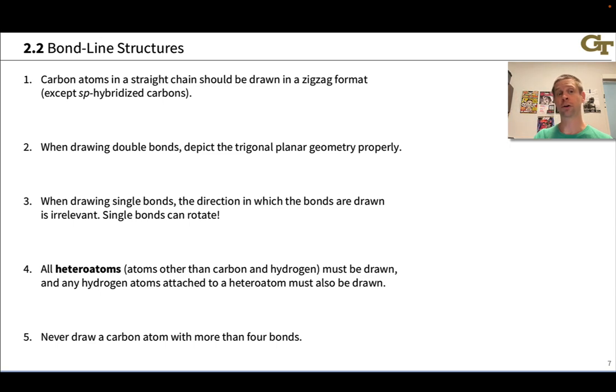Number one, carbon atoms in a straight chain of single bonds should be drawn in a zigzag format. Double bonds also. The exception is SP hybridized carbons where the geometry is linear. We should draw these SP hybridized atoms with straight line bonds to represent the linear geometry faithfully.